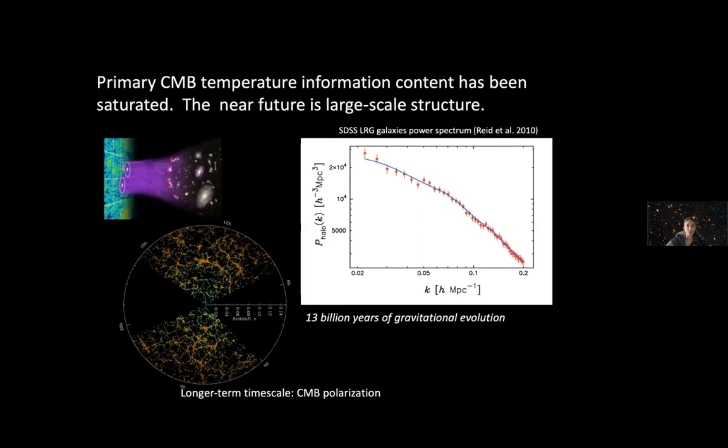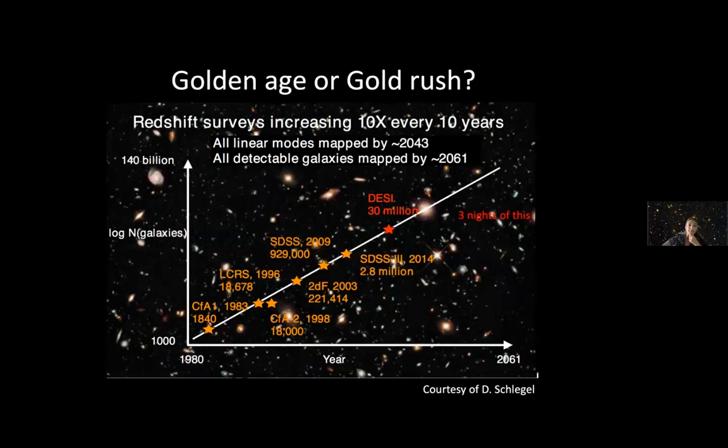To make an ultimate experiment for polarization or secondary effects requires a huge observational and instrumental effort. So the near future is in large-scale structure. Large-scale structure is the study of the statistical properties of clustering of galaxies. This plot from Dave Schlegel shows there is a sort of Moore's law for galaxy redshift surveys. Galaxy redshift surveys increase by about a factor of 10 every 10 years.